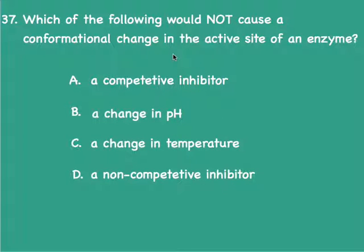Which of the following would not cause a conformational change in the active site of an enzyme? Competitive inhibitors fit into the active site and do not cause conformational changes, whereas changes in pH would bring about changes in the distribution of ions, which could change the structure of the active site. Similarly, a change in temperature would lead to breakage of bonds, and a non-competitive inhibitor, by binding to the allosteric site away from the active site, brings about stresses in the tertiary structure and thereby changes the conformation of the enzyme's active site. So the answer is A — a competitive inhibitor.